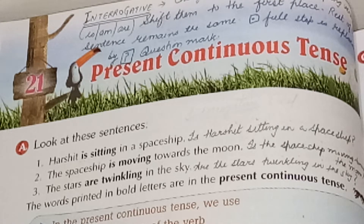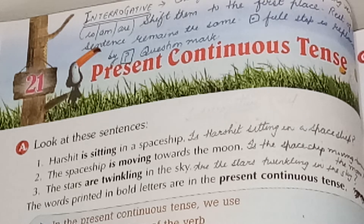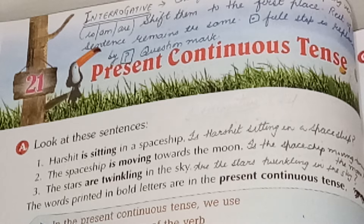This is in present only. We are talking about what is happening right now in the present — present mein jo kaam ho raha hai, how to do it and how to write it. Present continuous — continuous means what is going on continuously, and present means right now, in the present.